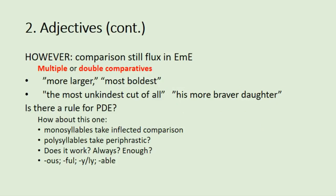With no prescribed correct form, we have multiple or double comparatives used all the time in early modern English. You can describe something as more larger or most boldest. From Shakespeare himself: 'the most unkindest cut of all' and 'his more braver daughter.' These are called the double superlative and the double comparative.